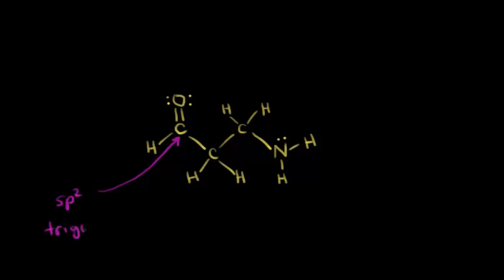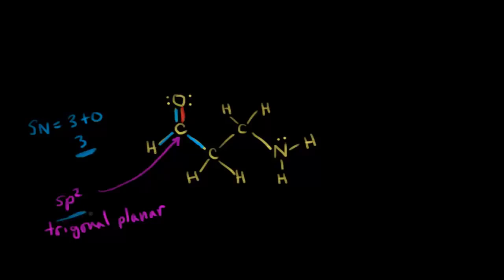Let's verify using steric number. Steric number equals number of sigma bonds: here's a sigma bond, here's a sigma bond, and the double bond between the carbon and oxygen contributes one sigma bond and one pi bond. So I have three sigma bonds, plus zero lone pairs of electrons — a steric number of three. I need three hybridized orbitals, confirming sp2 hybridization.